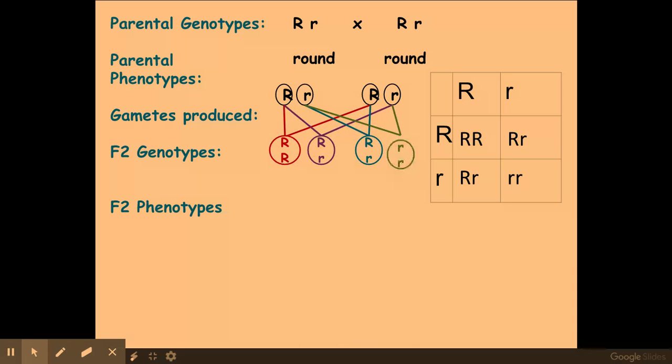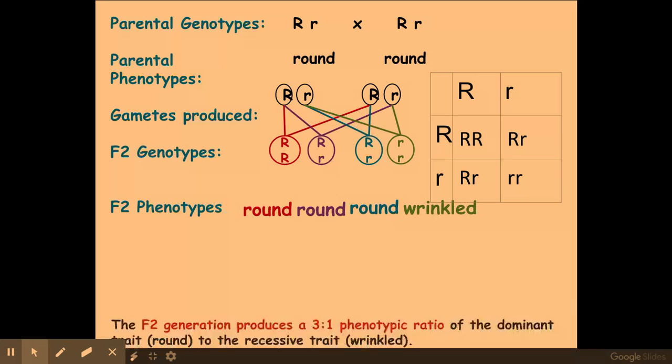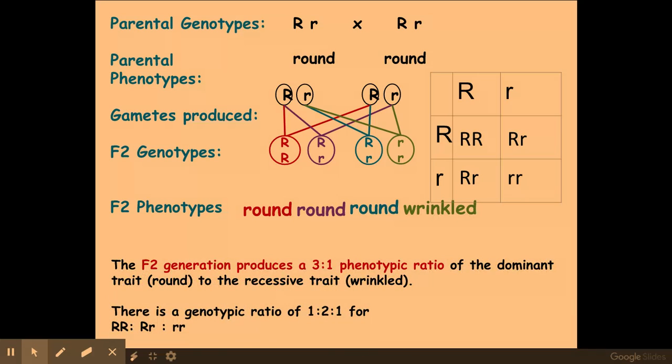My phenotypes for my offspring are round, round, round, and wrinkled. This means my F2 generation produces a 3:1 phenotypic ratio of the dominant trait round to the recessive trait wrinkled. It's really important you say what the numbers are representing as well, not just giving a 3:1, but actually saying which is three and which phenotype is the one.